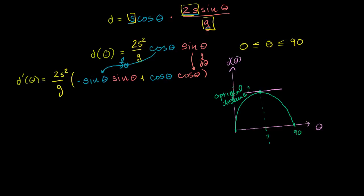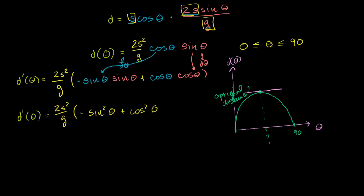We can simplify this a good bit. The derivative d prime is equal to — keeping the constant out front: 2s² over g — times negative sine of theta times sine of theta, which is negative sine squared of theta, plus cosine theta times cosine theta, which is cosine squared of theta. We want to find the angle at which this derivative, or instantaneous slope, is 0, so let's set this equal to 0.